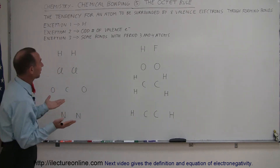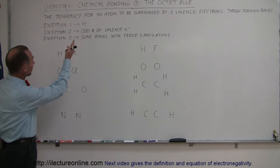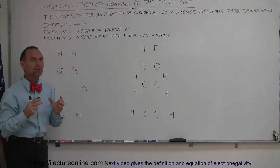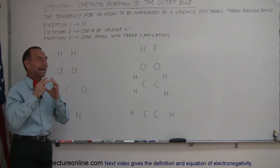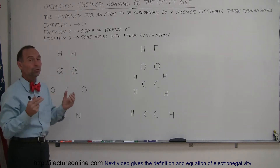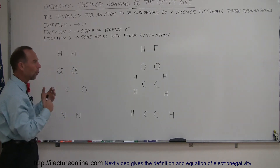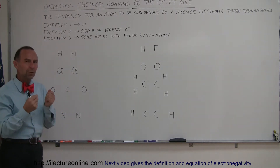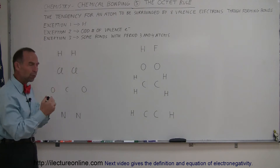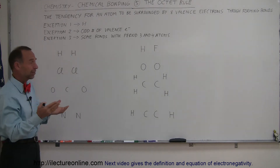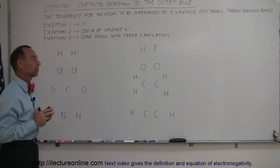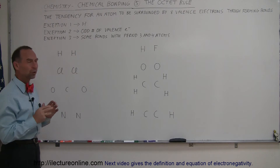What is the octet rule? Well, I have it written up here. It says the tendency for an atom to be surrounded by eight valence electrons when forming bonds. One of the key ways in which we can figure out how bonds are formed is to realize that almost every atom must have eight valence electrons around them.